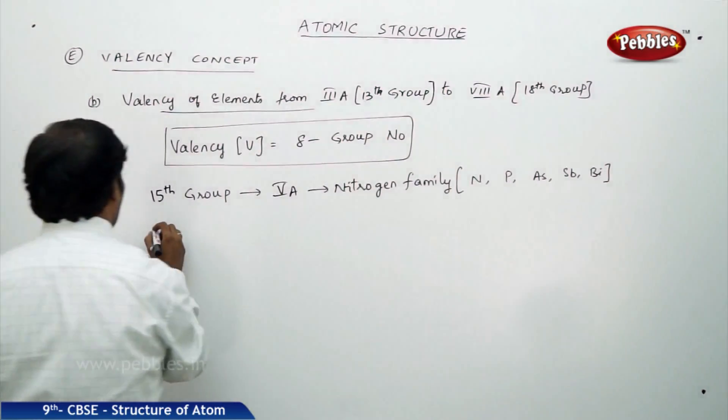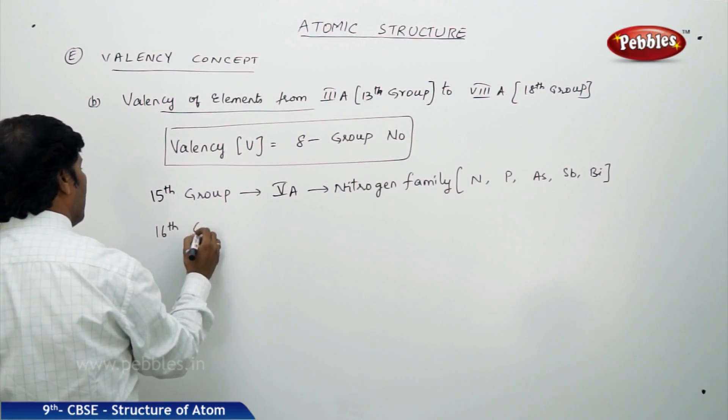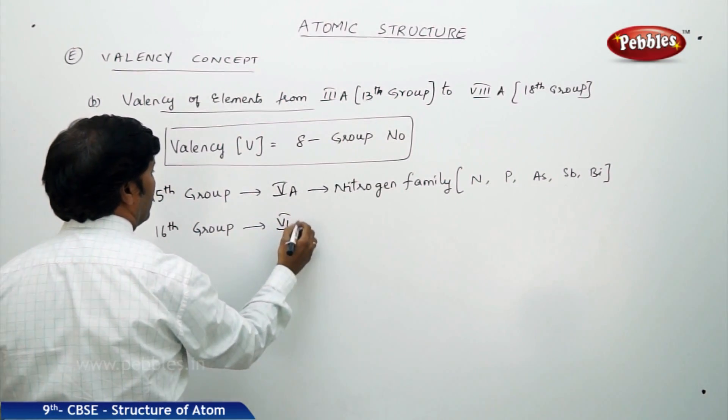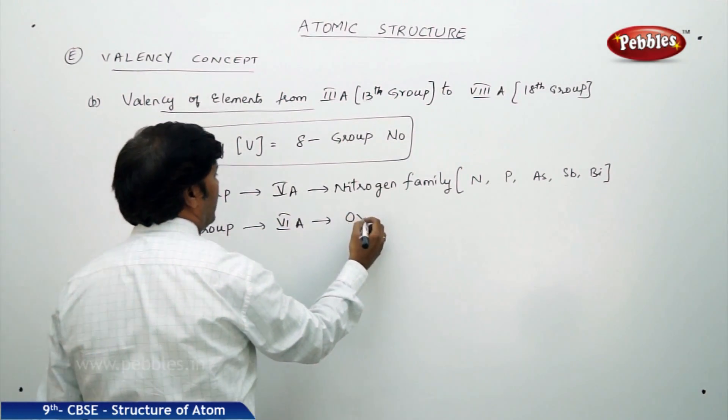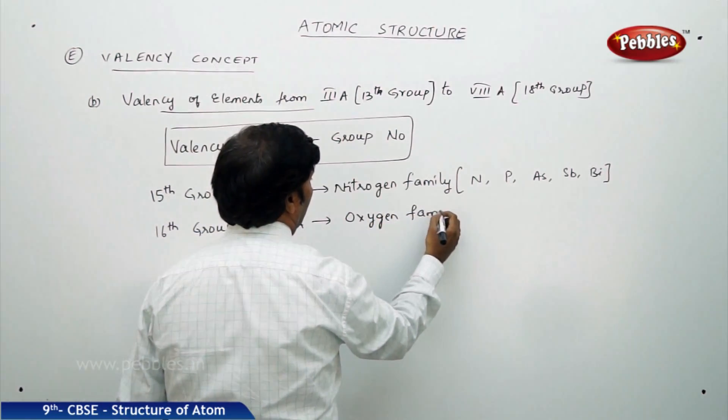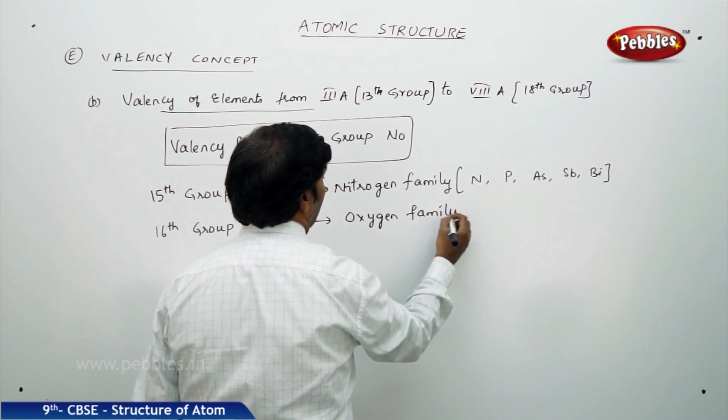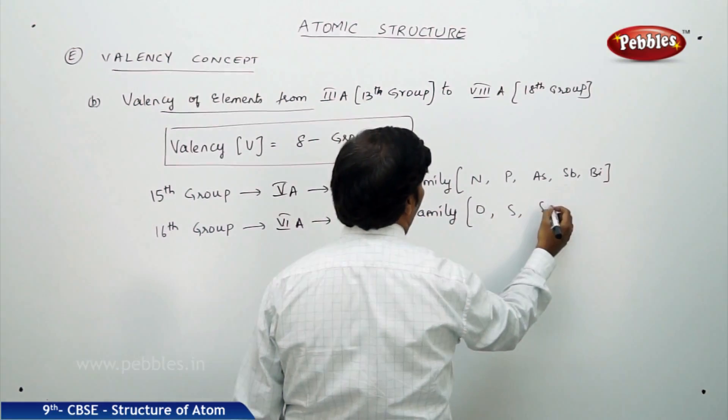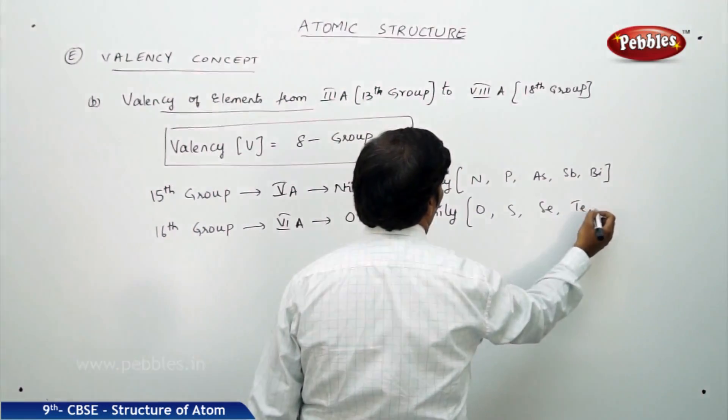Go for 16th group, 6A group, oxygen family: oxygen, sulphur, selenium, tellurium, polonium.